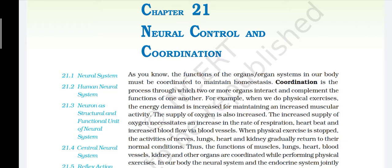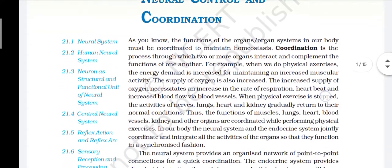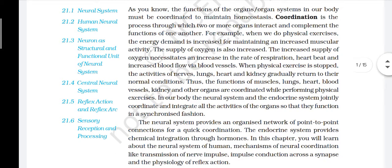Thus the functions of muscle, lungs, heart, blood vessels, kidney and other organs are coordinated while performing physical exercise. In our body, the neural system and the endocrine system jointly coordinate and integrate all the activities of the organs so that they function in a synchronized fashion. The neural system provides an organized network of point-to-point connections for quick coordination. The endocrine system provides chemical integration through hormones. In this chapter you will learn about the neural system of humans, mechanism of neural coordination like transmission of nerve impulse, impulse conduction across a synapse, and the physiology of reflex action.